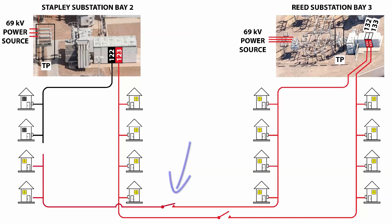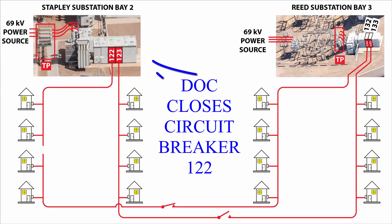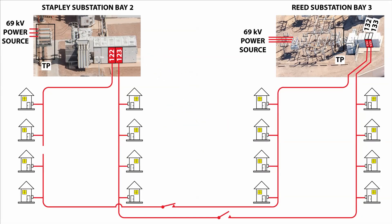Note that Reed substation is now supplying power to some customers who had previously been supplied by Stapley. Finally, DOC closes circuit breaker 122 at the Stapley substation, and since the fault has been isolated from the power system, circuit breaker 122 remains closed. Now all 800 customers have power restored to normal, but the original fault condition still exists and must be repaired within a few months, since the looped system is vulnerable to a longer-duration outage affecting more customers if another fault occurs after the normal open has been closed.